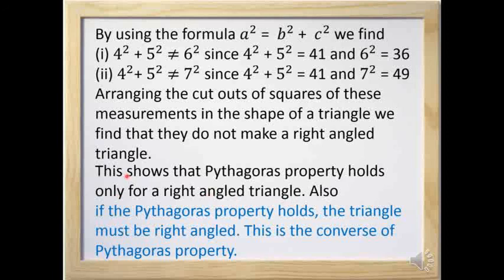This shows that the Pythagoras property holds only for a right angle triangle. Also, if the Pythagoras property holds, the triangle must be a right angle triangle. This is the converse of the Pythagoras property.